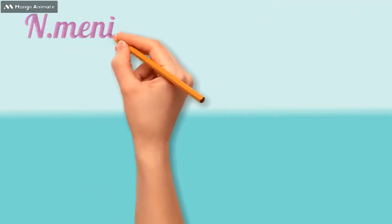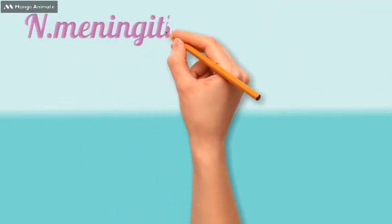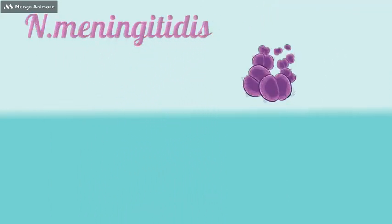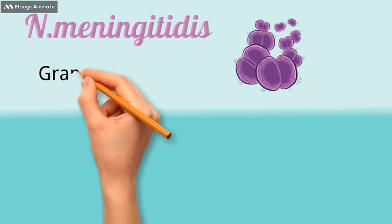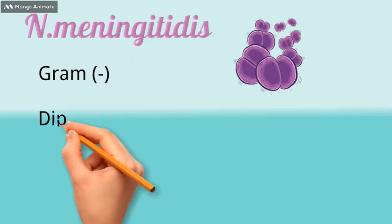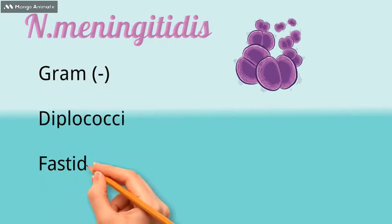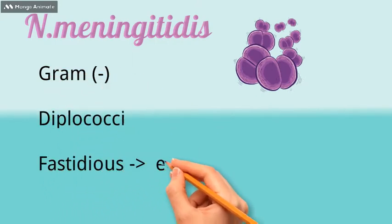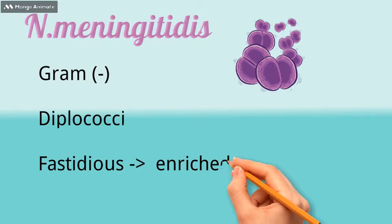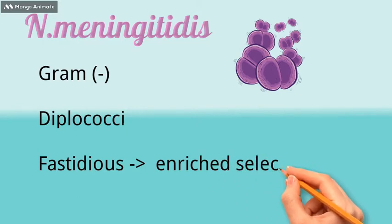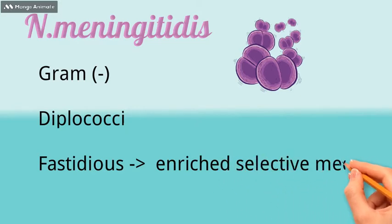Moving to the topic Neisseria meningitidis, it's a gram-negative diplococci. It is a fastidious organism, therefore it requires enriched selective media for its growth.